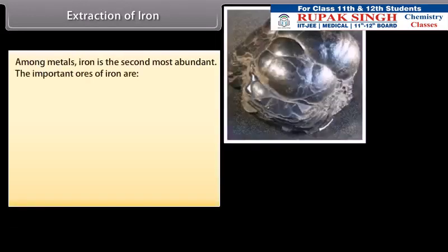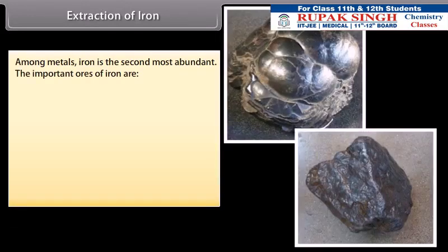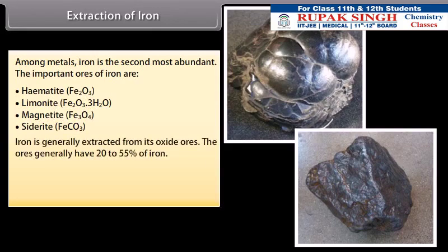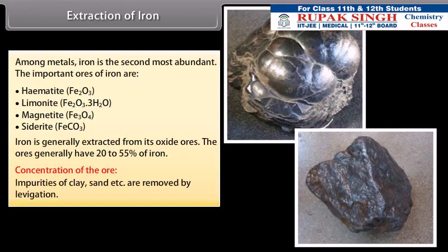Extraction of Iron. Among metals, iron is the second most abundant. The important ores of iron are: Hematite or red iron ore, Limonite or brown ore of iron, Magnetite and sidrite. Iron is generally extracted from its oxide ores. The ores generally have 20-55% of iron. Concentration of the ore: Impurities of clay, sand, etc. are removed by lavigation.